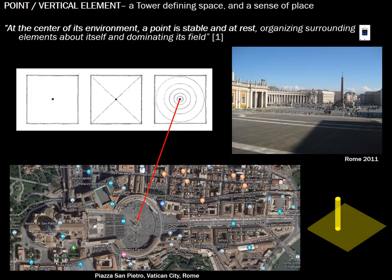This is Rome — a picture I took in 2011. You can see how a tower generates space around it. St. Peter's Basilica, where the pope gives services, is in Vatican City — a separate place within Italy, guarded by the Swiss Guard. The obelisk in the center of St. Peter's Square certainly generates a space around it.